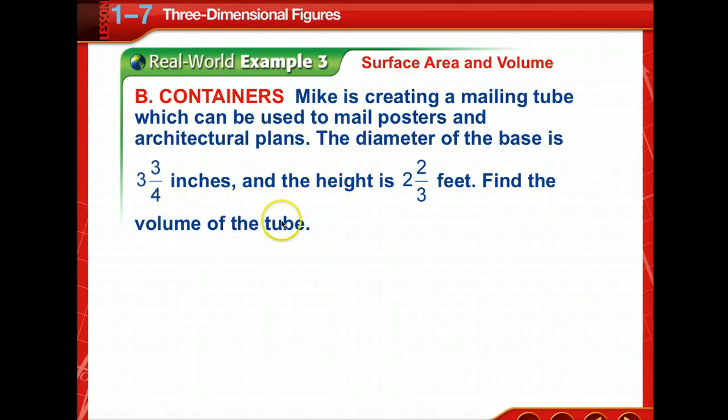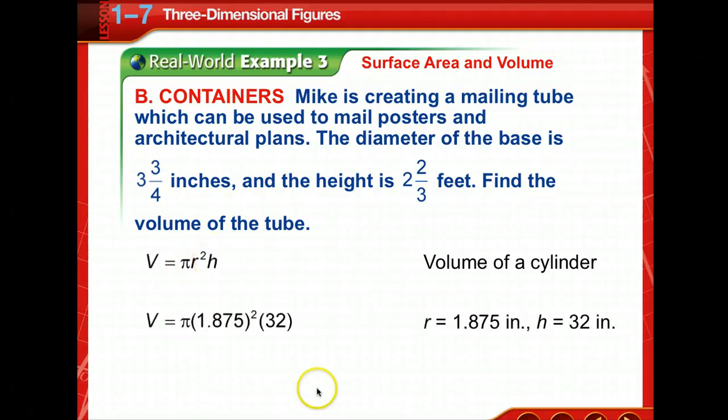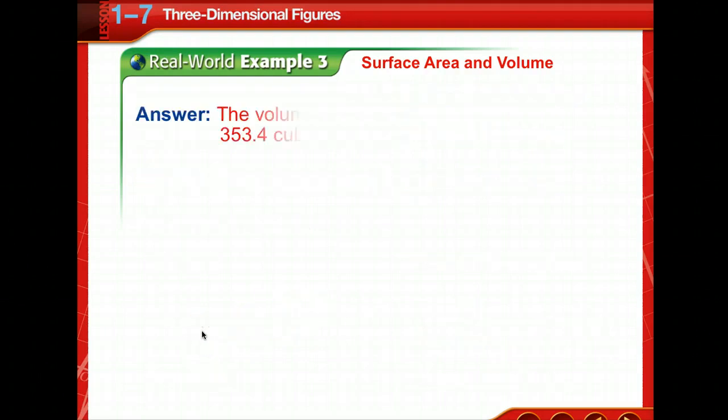Now we're going to find the volume. The formula for volume of a cylinder is pi r squared h. We've already found the radius and height from the previous problem, so we use a calculator and the volume of the tube is about 353.4 cubic inches.